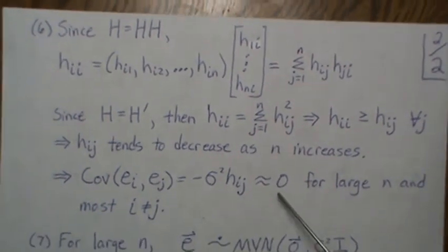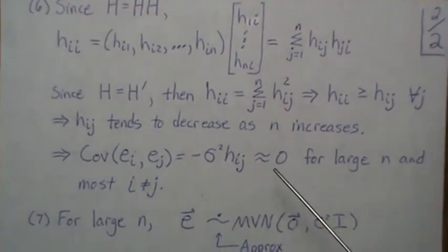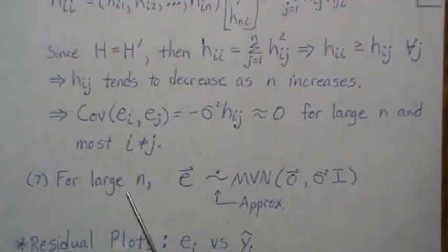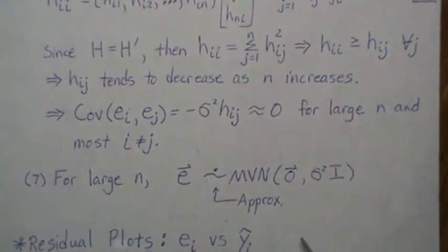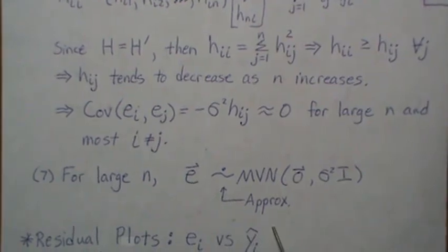And the variance is roughly constant. So what we've just shown is that for large n, the residuals are approximately multivariate normal with mean zero and covariance matrix sigma squared I.